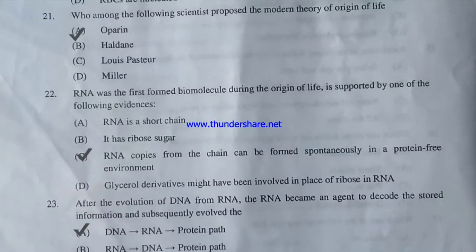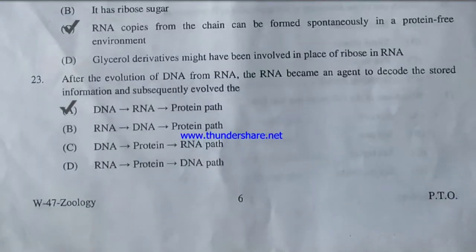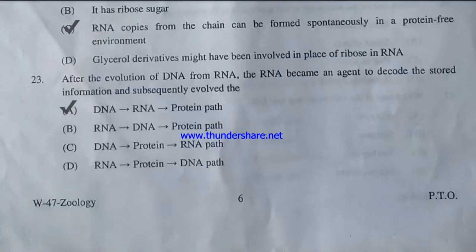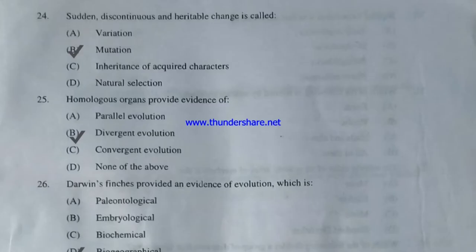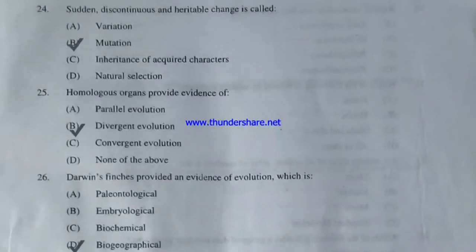After the evolution of DNA from RNA, RNA became an agent to decode stored information. The pathway that subsequently evolved is — DNA to RNA to protein, RNA to DNA to protein, DNA to protein to RNA, or RNA to protein to DNA? The answer is DNA to RNA to protein. Next: sudden, discontinuous, and heritable change is called variation, mutation, inheritance of acquired characters, or natural selection? The answer is mutation.